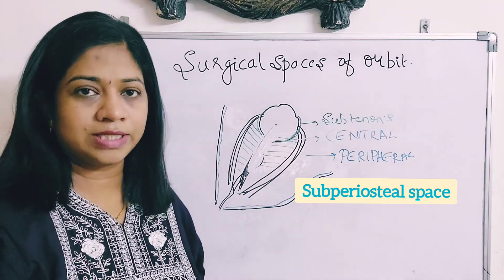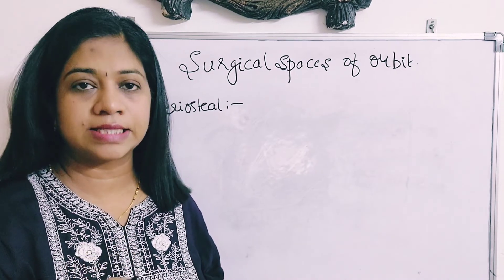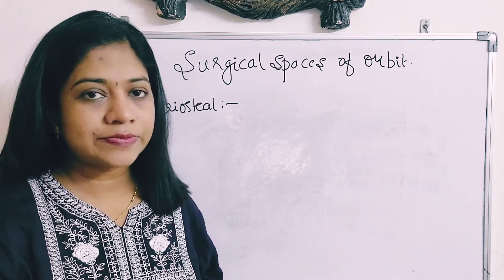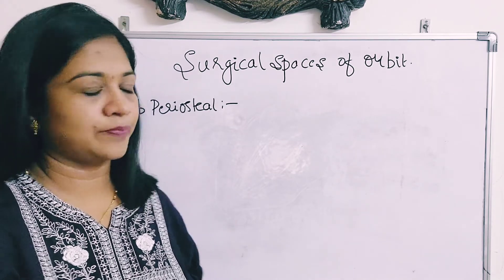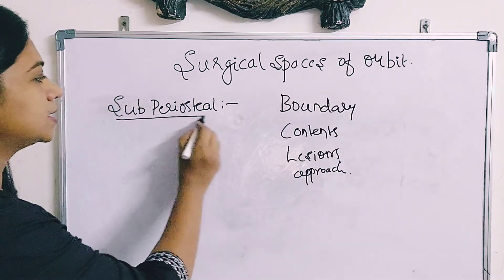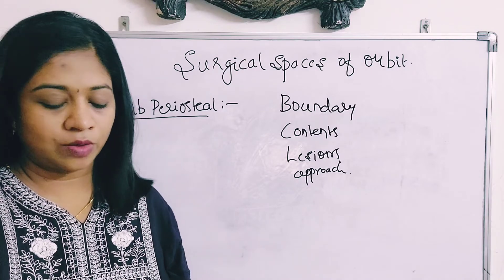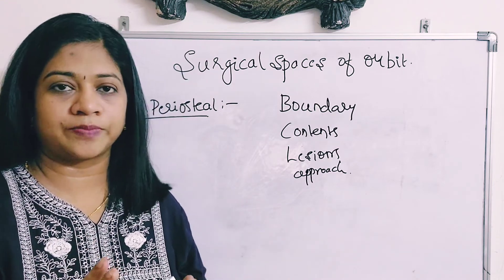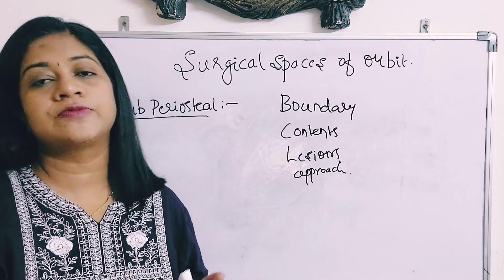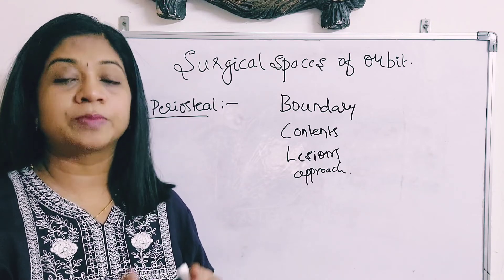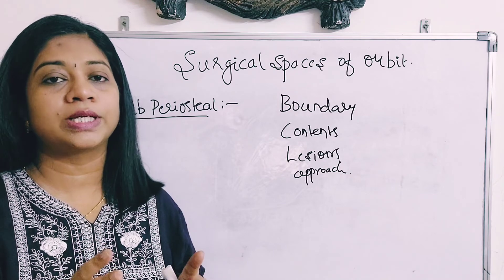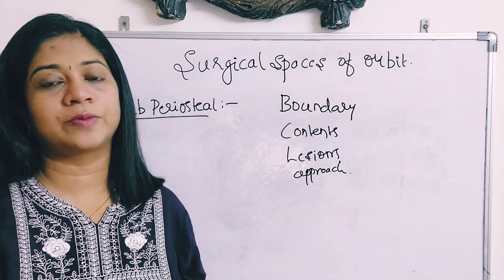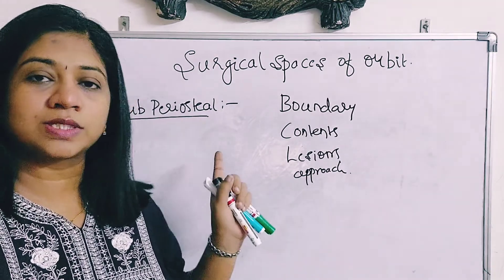When studying these surgical spaces, you should know the boundaries, the contents, the lesions which can occur in each space, and how to approach each space. Coming to the first one — the subperiosteal space. It is a potential space, meaning the two surfaces are in opposition. In reality, there is no obvious space present between these two opposed surfaces, but if any lesion or tumor forms there, it will expand and leave a space.